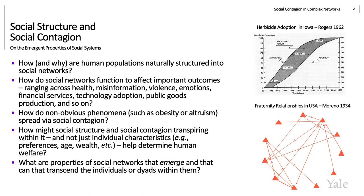This shift in perspective presented new puzzles and prompted new empirical questions. For example, we could ask: how and why are human populations naturally structured into social networks? How do social networks function to affect important outcomes ranging from health, misinformation, violence, emotions, financial services, technology adoption, and public goods production? How do non-obvious phenomena such as obesity or altruism spread via social contagion? How might social structure and social contagion — not just individual characteristics such as preferences, age, or wealth — help determine human welfare? And what are properties of social networks that emerge and can transcend the individuals or dyads within them?